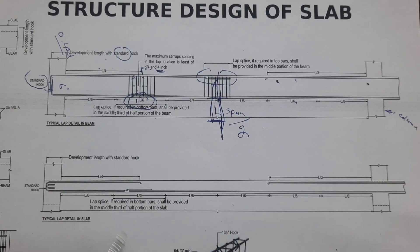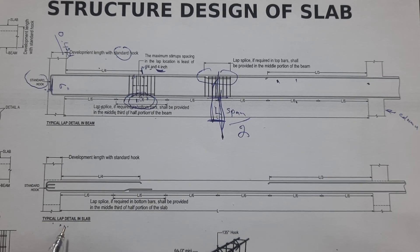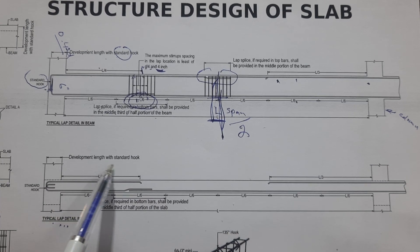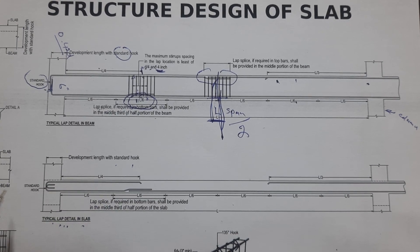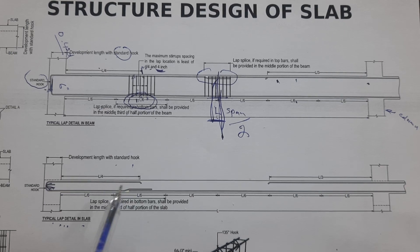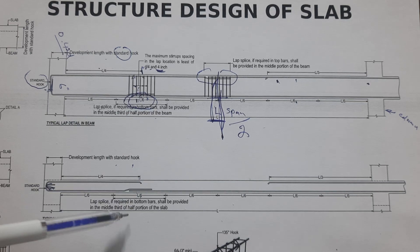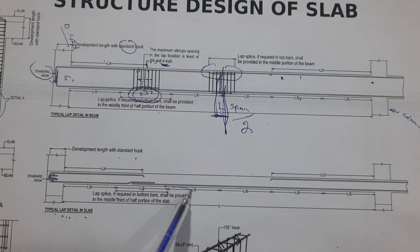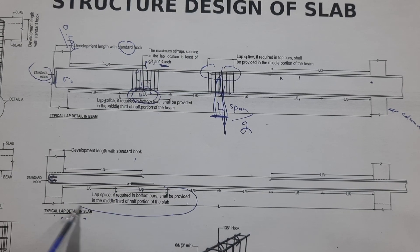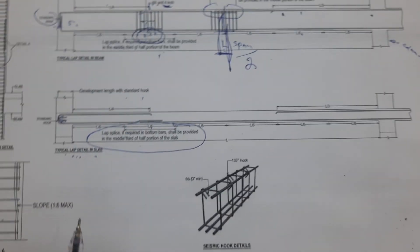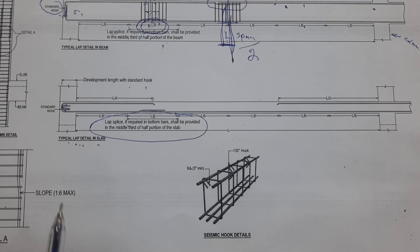Next is the slab — this is the typical lap detail in the slab. Development length with standard hooks: you can see the hooks at the distance of L/4. The same rules already provided for the beam apply to the slab as well, as we discussed. You can apply these same guidelines to the slab.